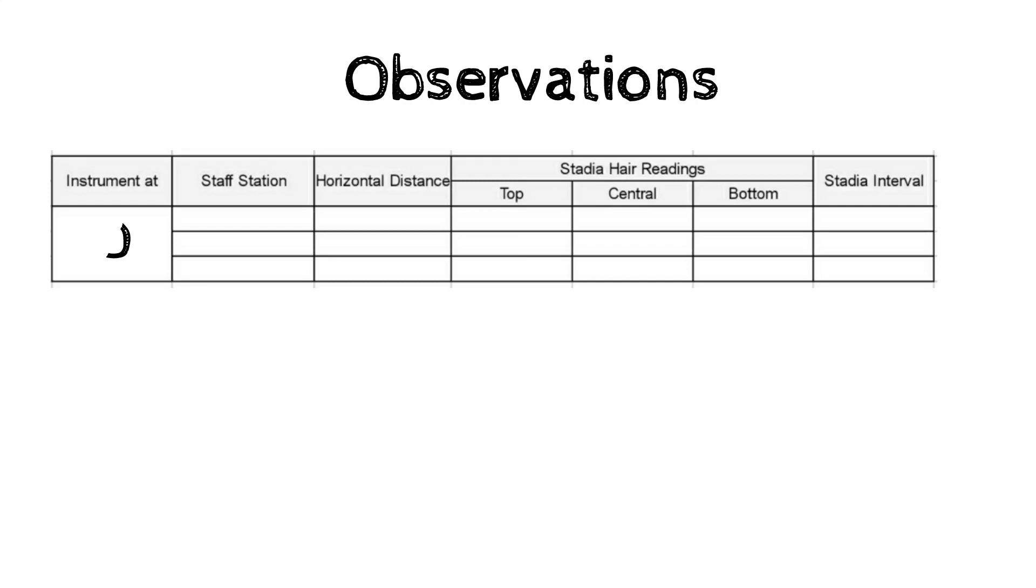Observations can be noted as below. Here, the stadia interval can be calculated by top reading minus bottom reading. For example, 1.255 minus 1.205 gives stadia interval 0.05 meters.